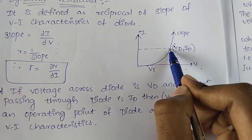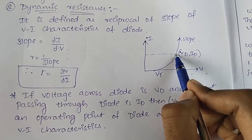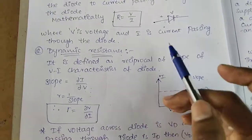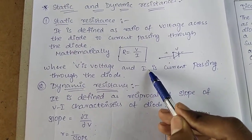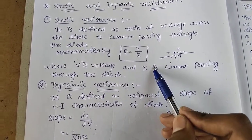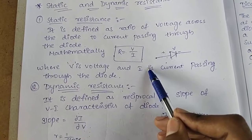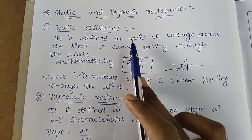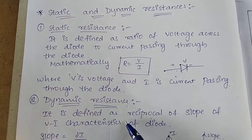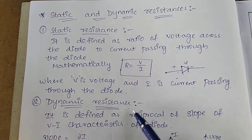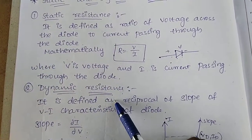This is a very small topic and it may be asked for 2 marks or 1 mark. It is very easy and covers the basics of EDC — static resistance and dynamic resistance.